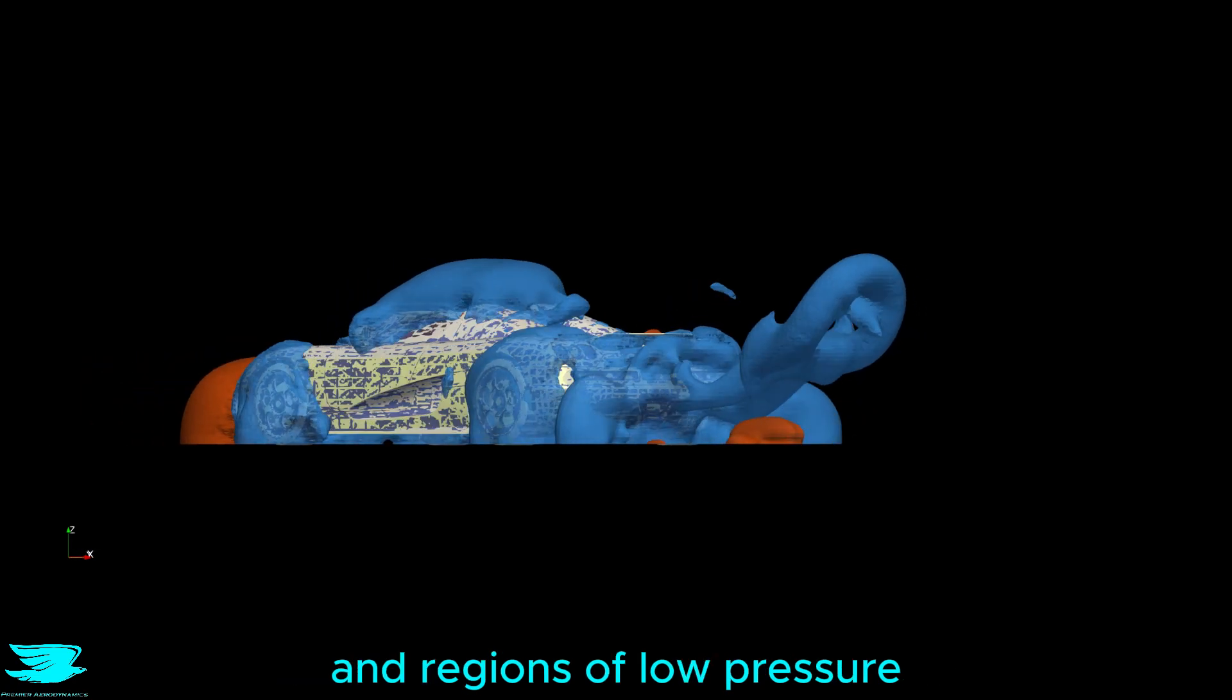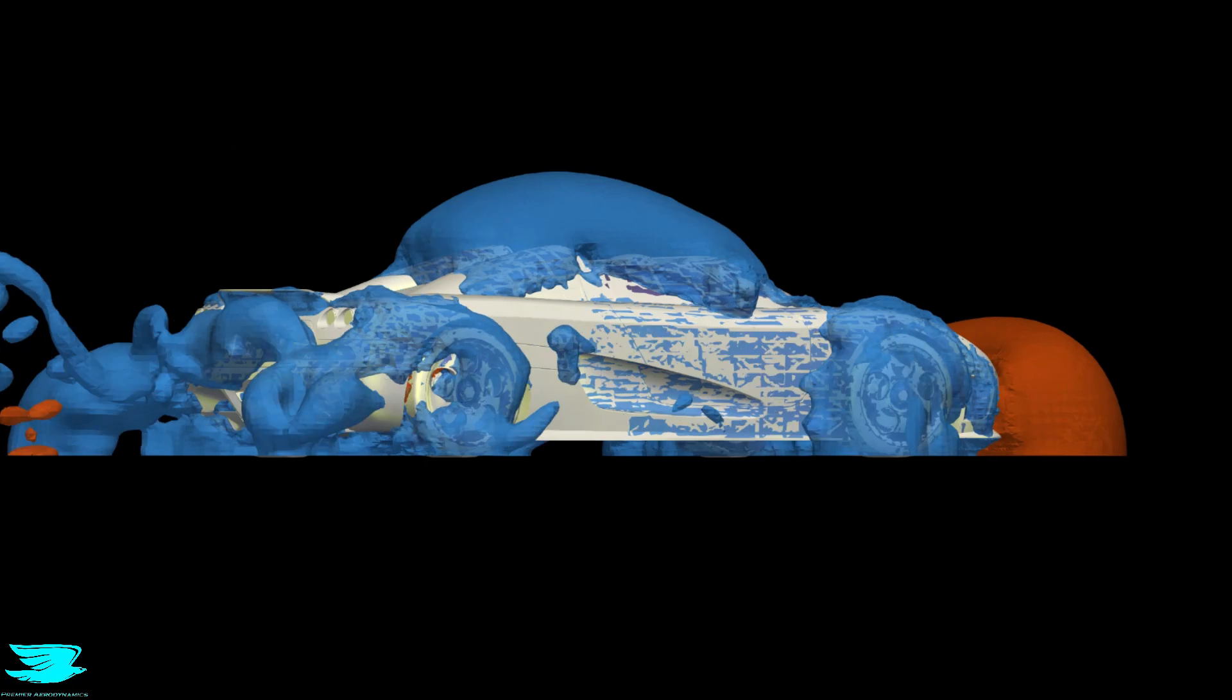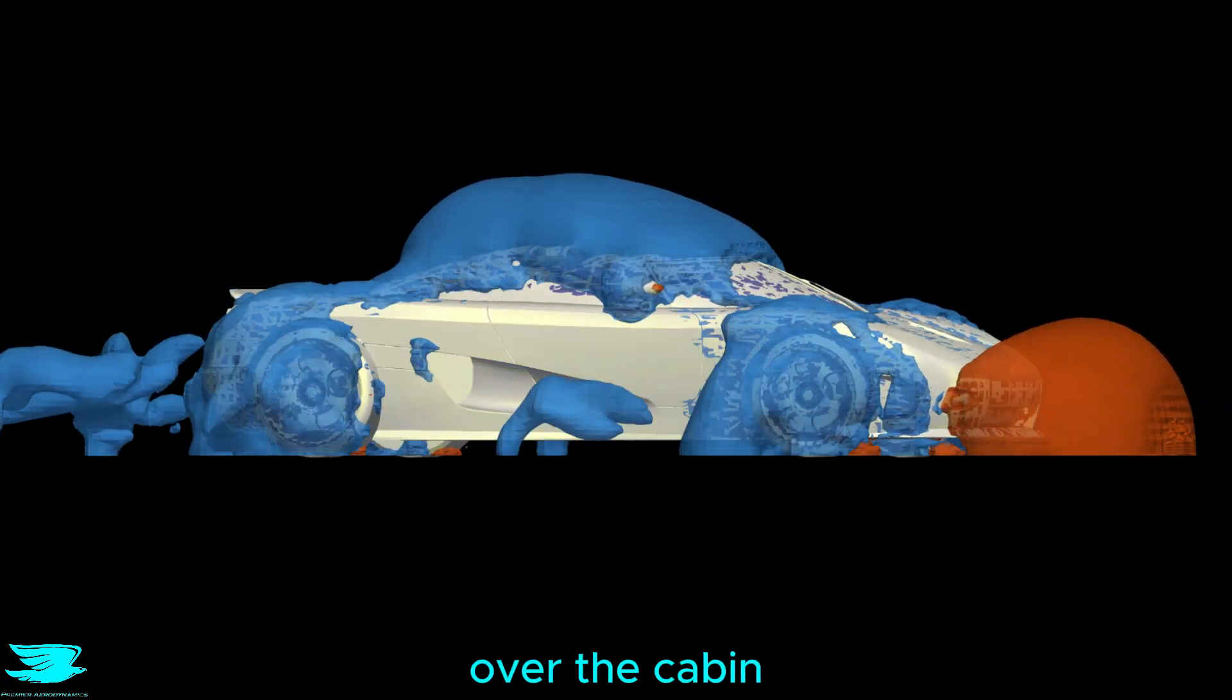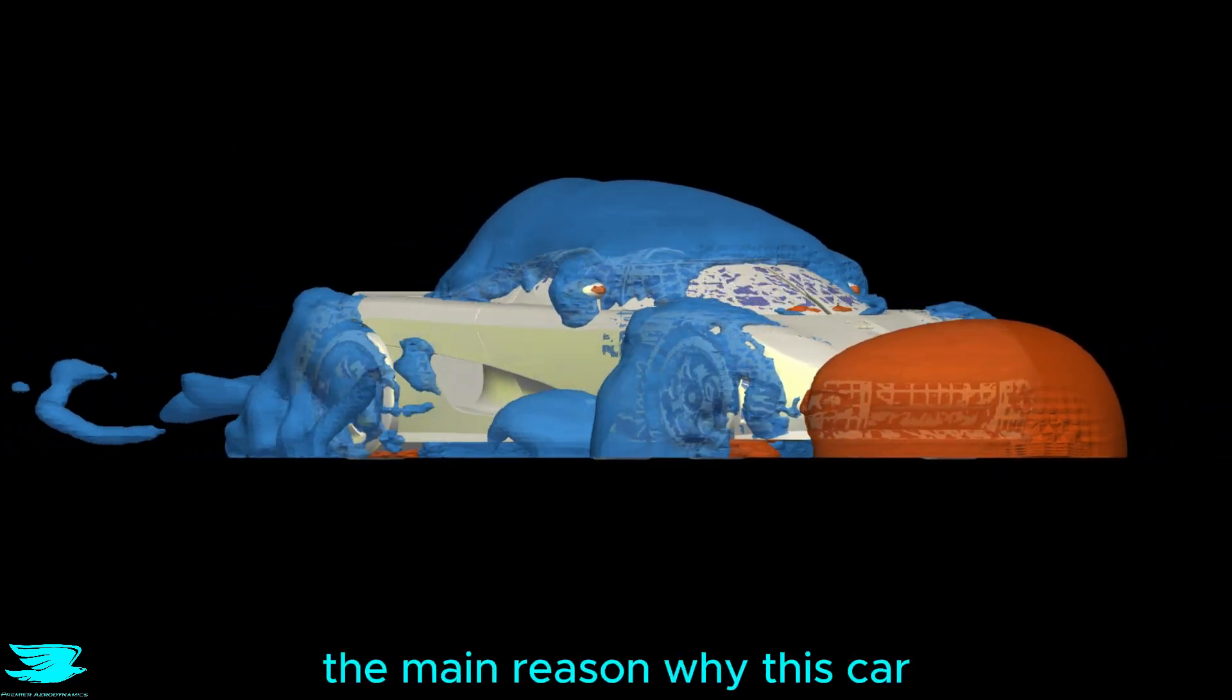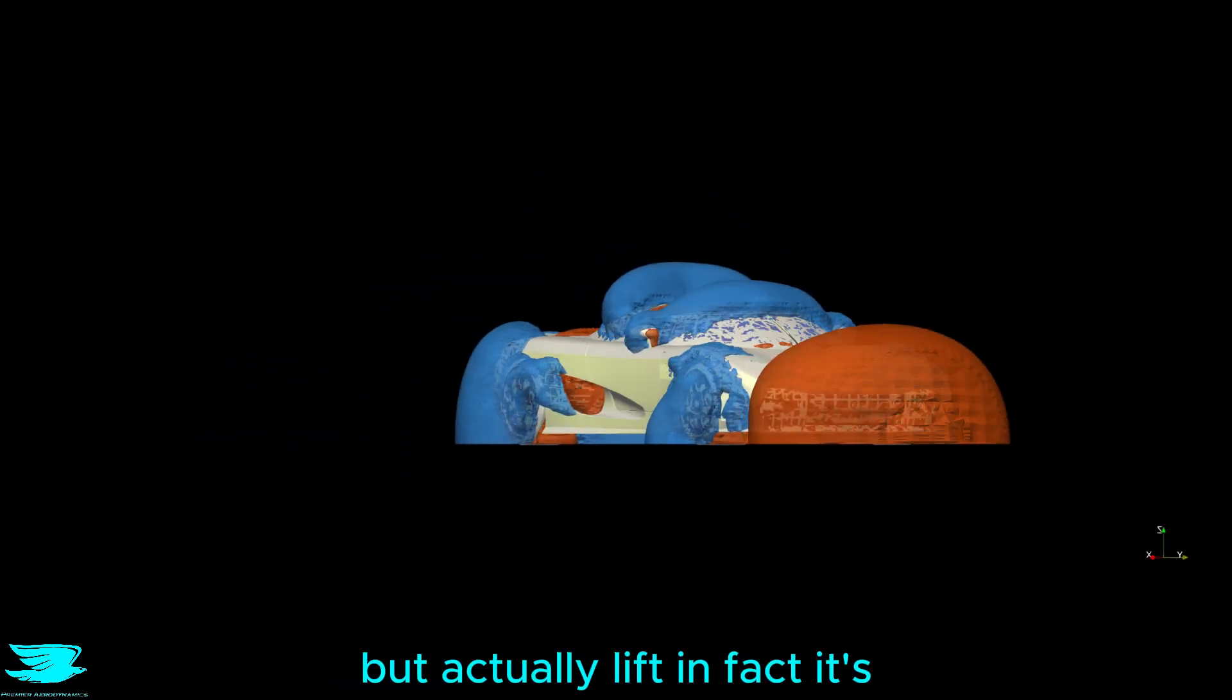These are pressure isosurfaces which show us regions of high pressure and regions of low pressure, which I think is pretty cool. The wheels are encapsulated in low pressure, and the very large region of low pressure over the cabin is arguably the main reason why this car doesn't produce downforce but actually lift.